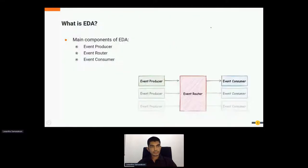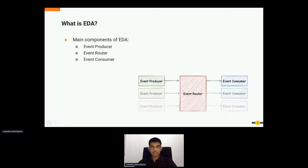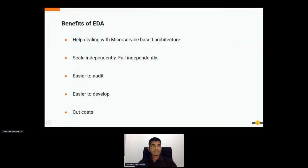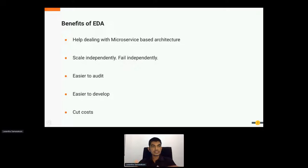In an event-driven architecture, there are three main components: the event producer, event router, and event consumer. The event producer produces events. The router filters and publishes that event to the event consumer to be consumed. With an event router in place, you can plug event producers and event consumers seamlessly. These are the benefits of EDA when you are using it for your projects.